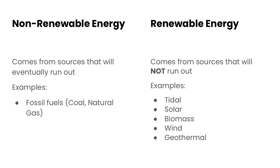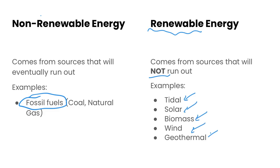Fossil fuels are non-renewable energy sources. Things like coal and natural gas come from sources that will eventually run out. There are also renewable energy sources, which come from sources that will not run out. Some quick examples are tidal, solar, biomass, wind, and geothermal — these are all examples of renewable energy sources.